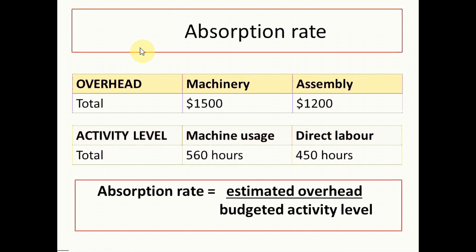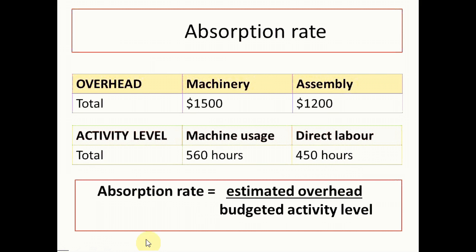Here's an example. A company has overhead costs for the machinery department of 1500, while the assembly department has 1200. The activity level shows machine usage at 560 hours and direct labor at 450 hours. We'll use the absorption rate formula to find the absorption rate for each department.